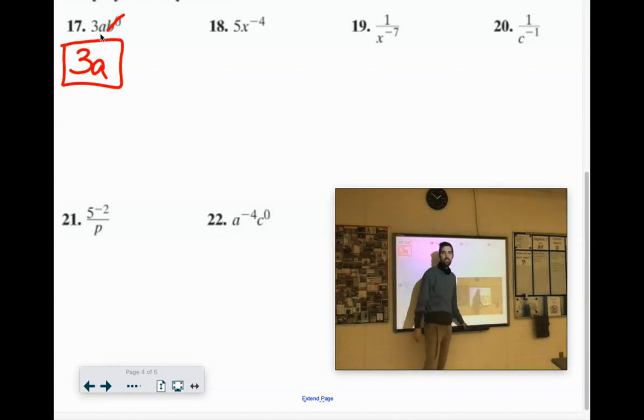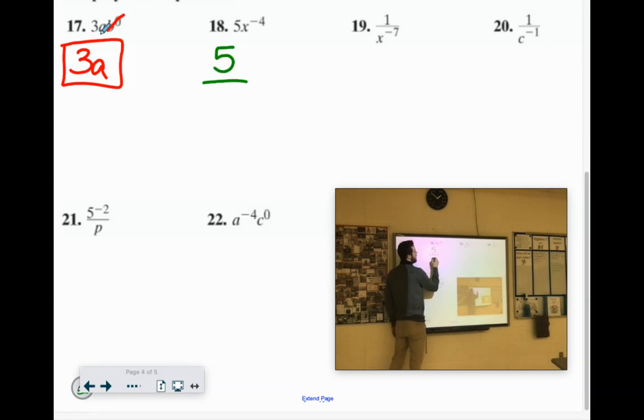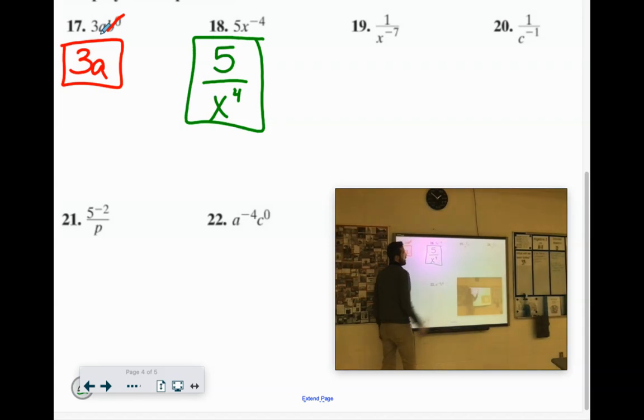Number 18. Do we have anything to the 0 power? No. Do we have any negative exponents? Yeah, the X. The 5 stays. The X moves because it has a negative exponent. 5 over X to the 4th. Sweet, we're cruising.